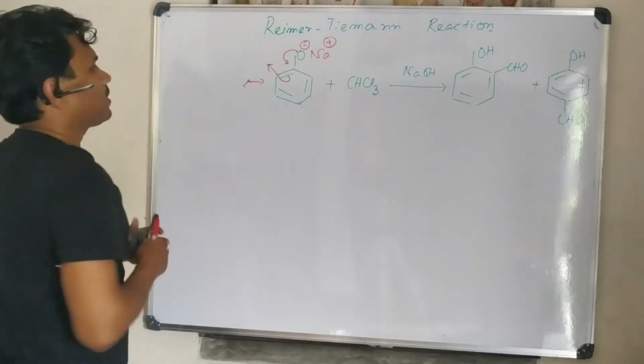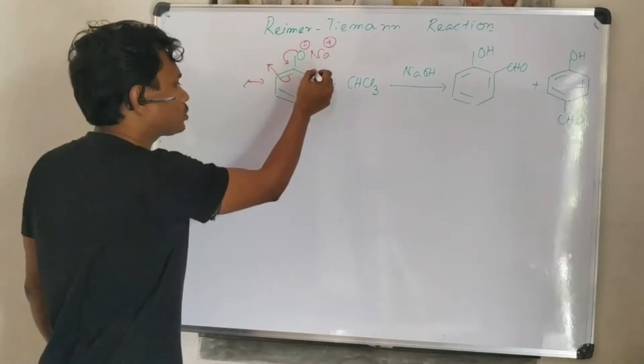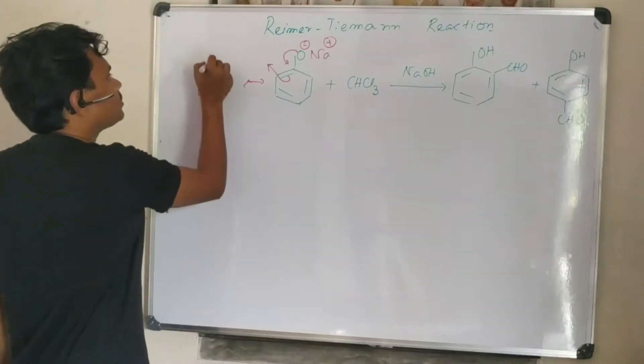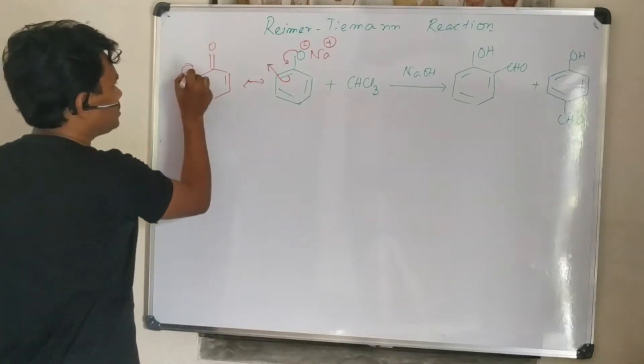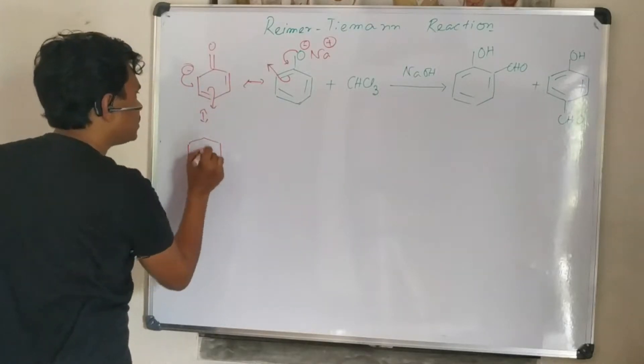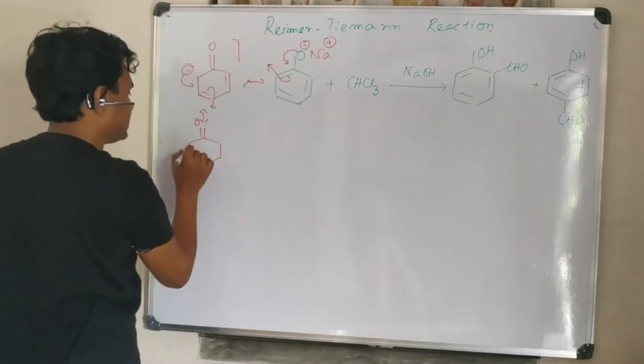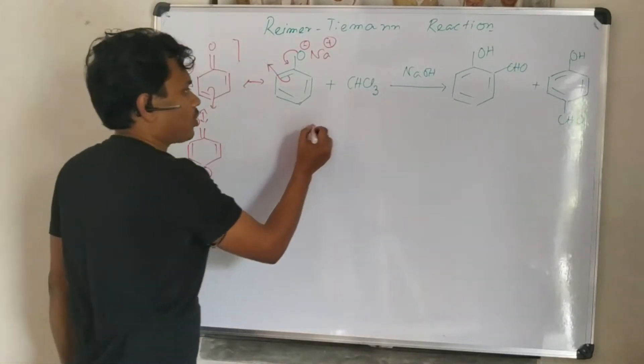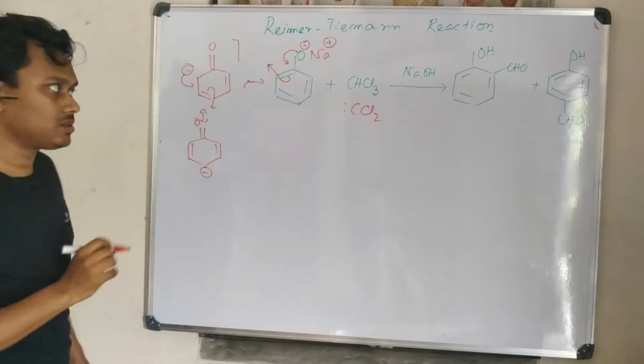Second point: due to resonance, this phenoxide has electron-rich carbons at ortho and para positions. The electrophilic attack of this CCl2, which is generated from chloroform, happens on these ortho-para centers. After this reaction, it can produce both ortho-substituted and para-substituted products.